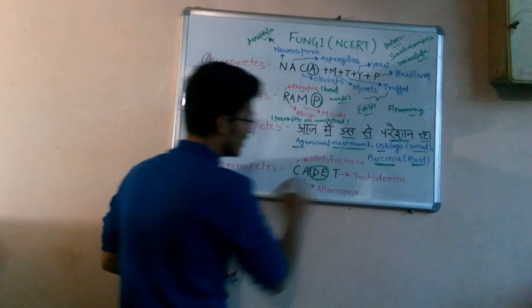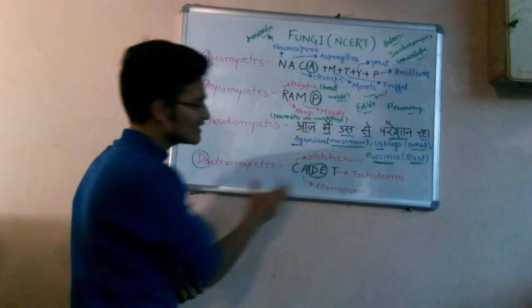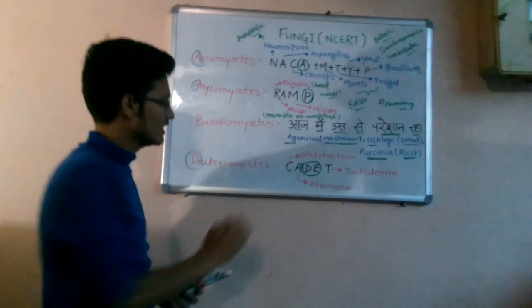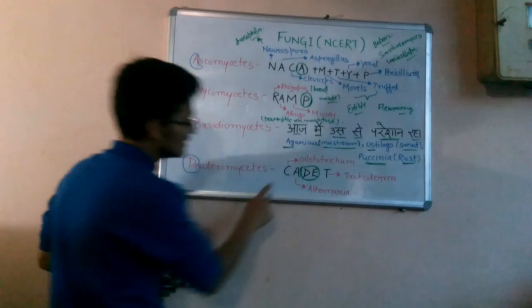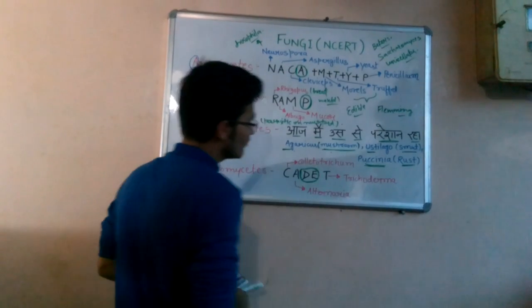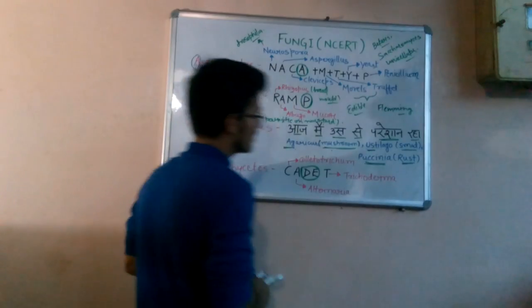Deuteromycetes - here we need to memorize the simple term CADET. Very simple term: CADET. C-A-D-E-T simply means Deuteromycetes. C means Colletotrichum, A means Alternaria, T means Trichoderma.